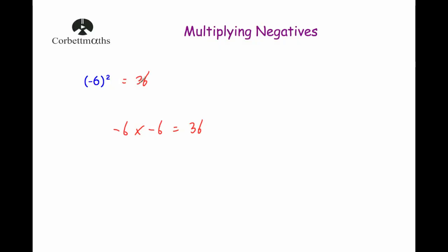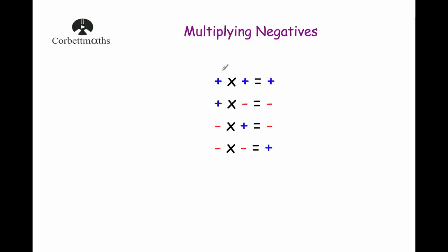So just remember these important rules: positive times positive is positive, positive multiplied by negative is negative, negative multiplied by positive is negative, and negative multiplied by negative is positive. The way to remember it: if you're multiplying two of the same sign — two positives or two negatives — the answer is positive. If you're multiplying one of each, the answer is negative.